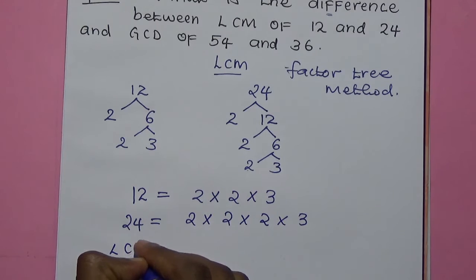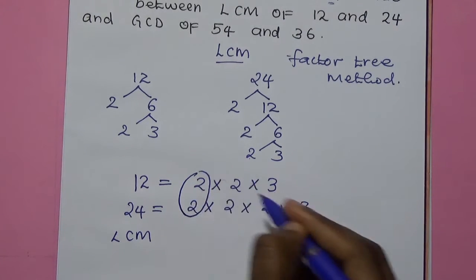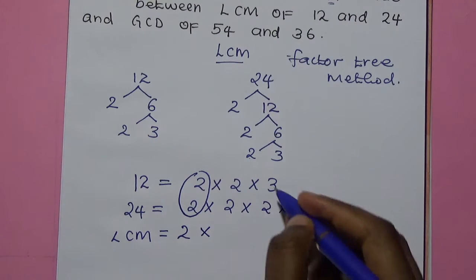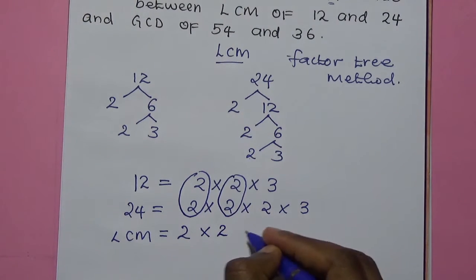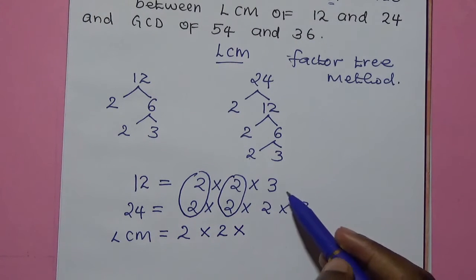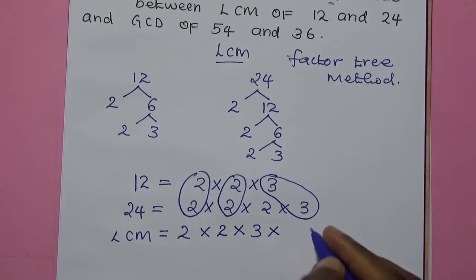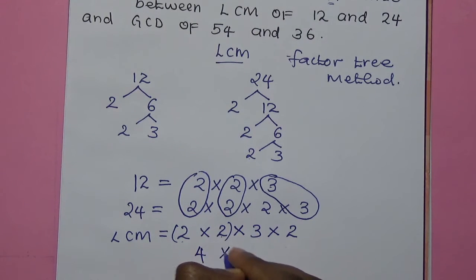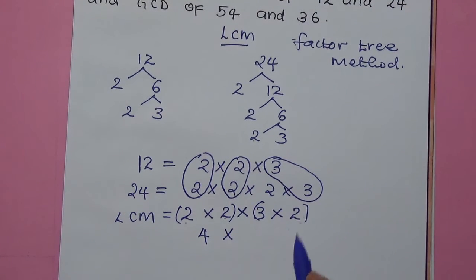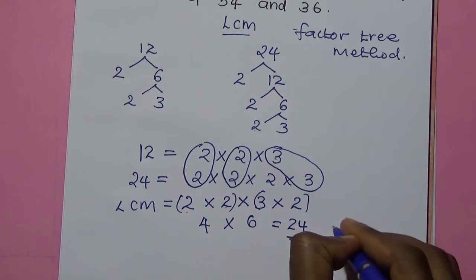Then we calculate the LCM. We group the factors into couples and pick one from each couple. We have a couple of 2s, so we pick one 2. We multiply by another 2, and we pick one 3. This gives us 2 times 2 is 4, multiplied by 3 times 2 is 6. Therefore, 4 times 6 is 24. This is the LCM.